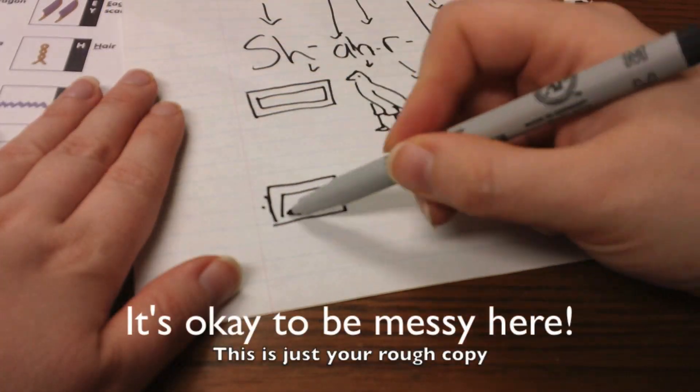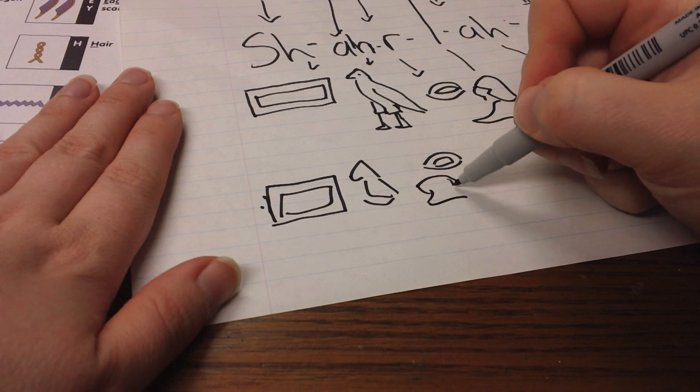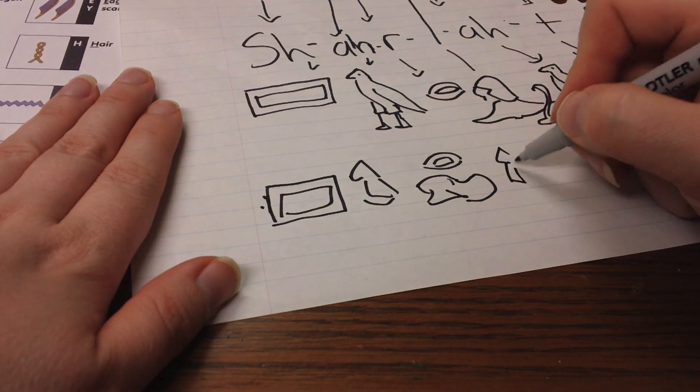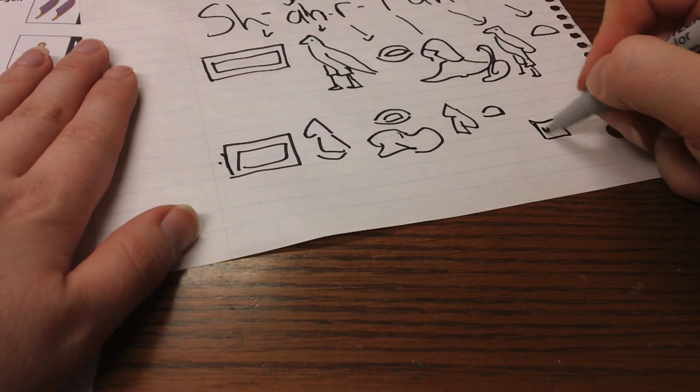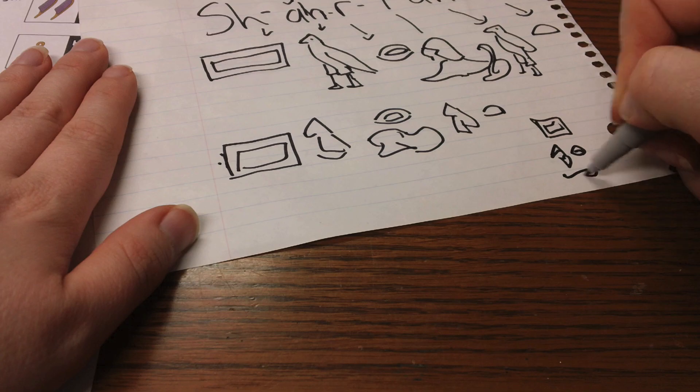Figure out a nice arrangement for your hieroglyphs. They can run either left to right or up and down, and the ancient Egyptians liked their names to look nice, so they would try to group the signs to fit into a neat square or rectangle.